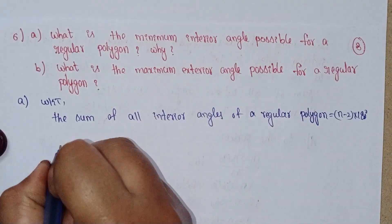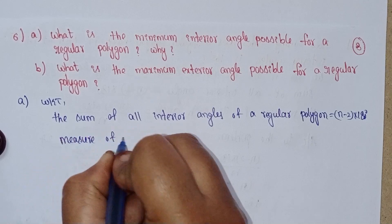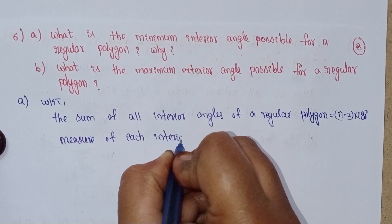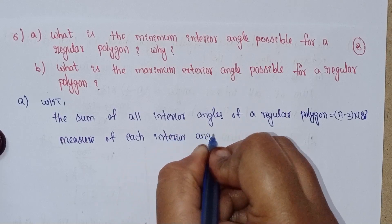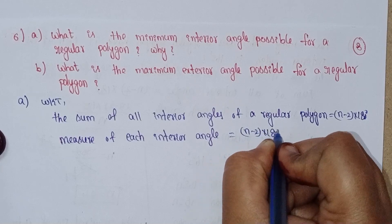The measure of each interior angle equals (n-2) times 180 degrees divided by n.